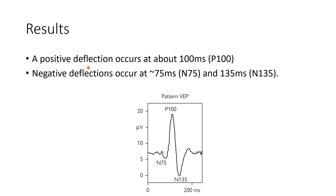Regarding the results of VEP, a positive deflection occurs at about 100 milliseconds — this is the P100. Negative deflections occur at around 75 and 135 milliseconds — these are N75 and N135.